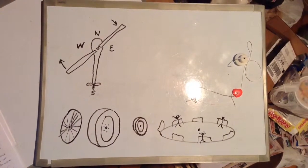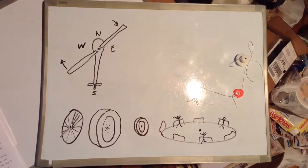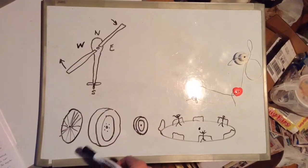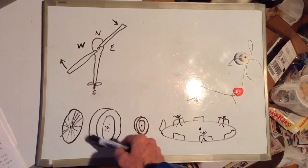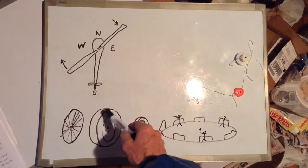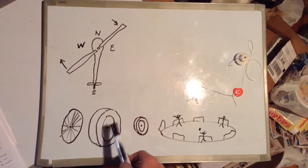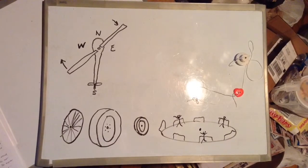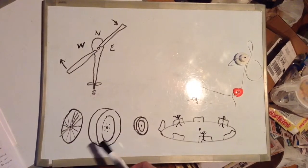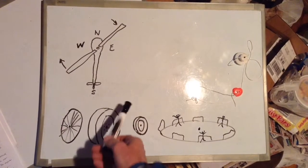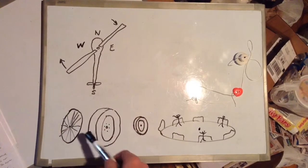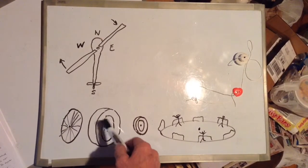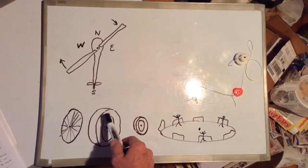This is part 2 of gyroscopic precession. We ended part 1 talking about how a bicycle wheel having the same diameter and same radius as a car wheel, turning the same number of revolutions per minute — the same angular velocity — the car wheel will still have a lot more angular momentum because it has so much more mass.